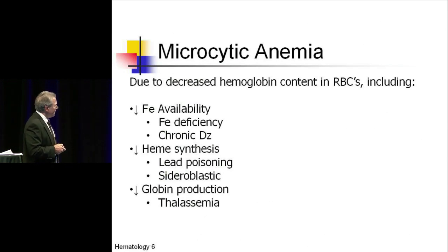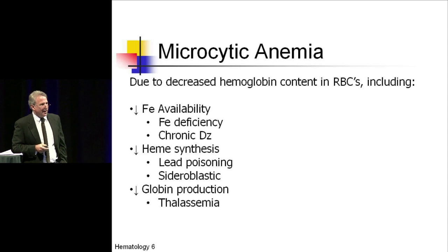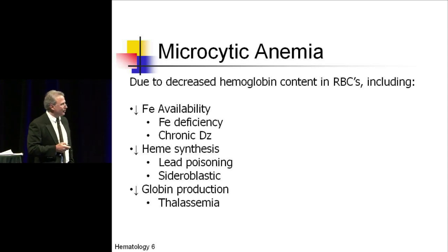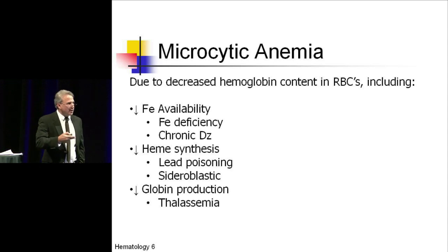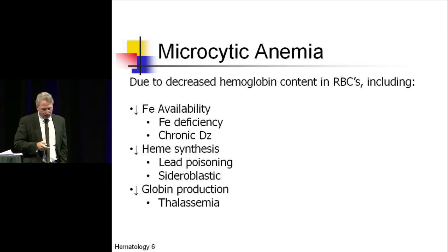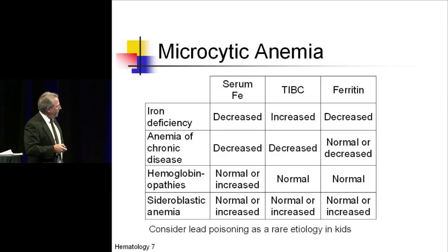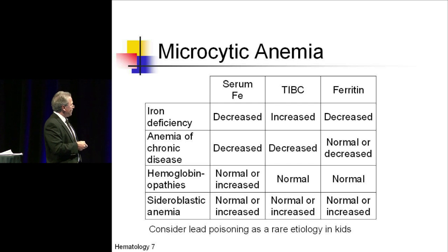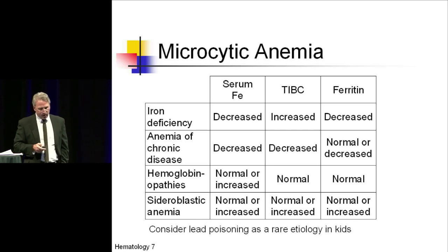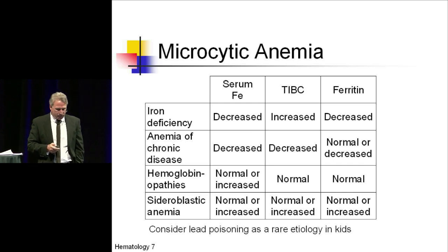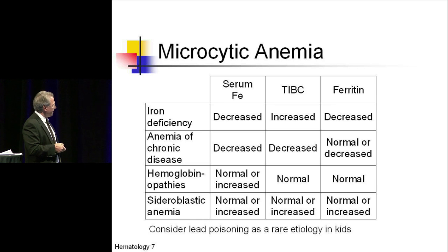Microcytic anemia is basically due to decreased hemoglobin content in the red cells. We are all used to thinking about iron as the cause, and iron does lead to decreased hemoglobin content. But also decreasing heme synthesis, as seen with sideroblastic anemia, and decreased globin production, as seen with thalassemia, also lead to decreased hemoglobin content. You can use serum iron, TIBC, and ferritin to help differentiate the cause. Lead poisoning can also be a rare cause of decreased heme synthesis in children.